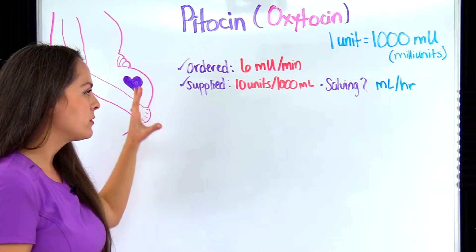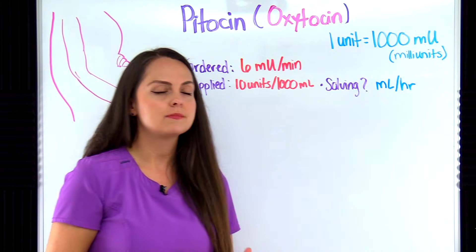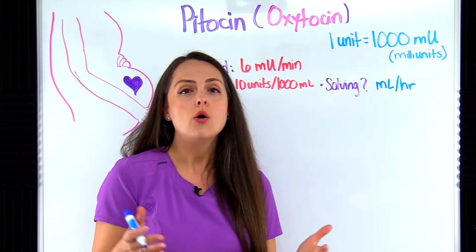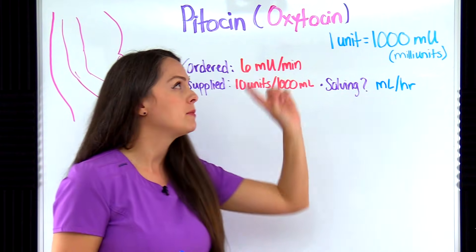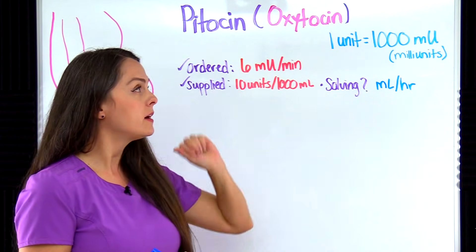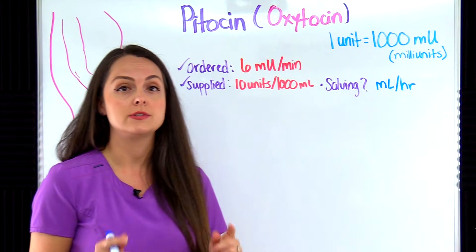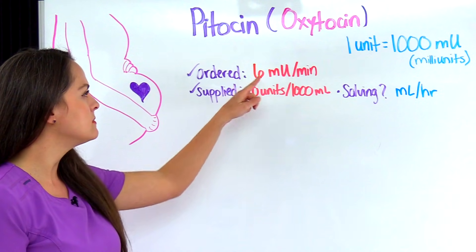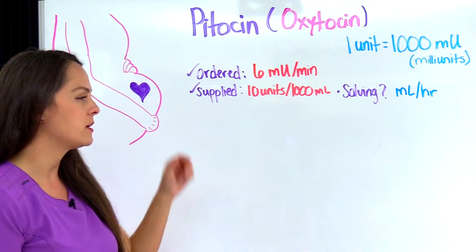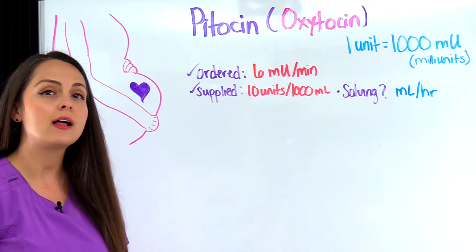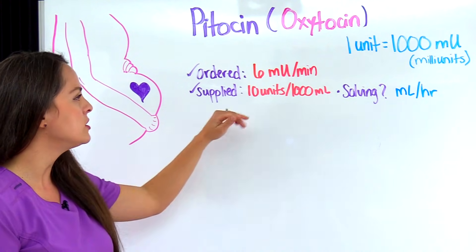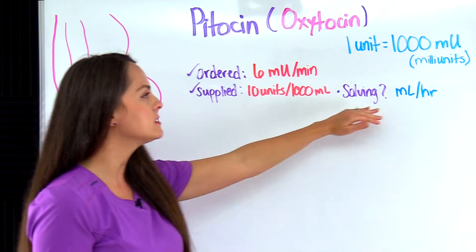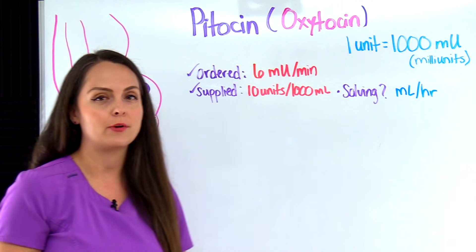We're going to solve using dimensional analysis, but if you prefer a different method like ratio and proportion or desired over half formula method, there are videos that will help you solve these problems using those methods. Our first problem: a patient is receiving six milliunits per minute of Pitocin, supplied with a bag that reads 10 units per 1,000 mLs in lactated Ringer solution, and we need to solve for milliliters per hour.